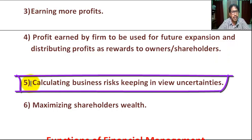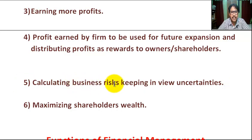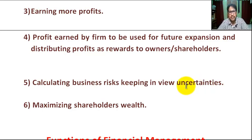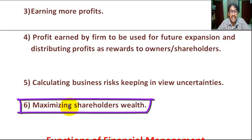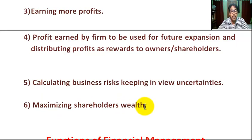Number five: calculating business risks, keeping in view uncertainties. Uncertainties means up and down of the sale. Keeping in view the uncertainty, calculate the business risks. Number six: maximizing shareholders' wealth — maximizing shareholders' profit.